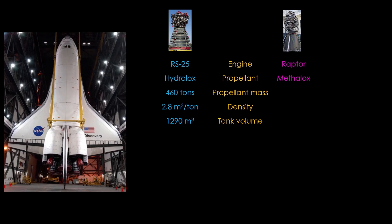SpaceX's Raptor engine burns liquid methane and oxygen, or methalox. This propellant combination is not as efficient as hydrolox, so it takes about 50 percent more fuel, or 700 tons total. However,